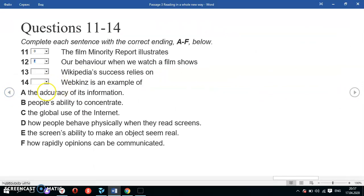Okay, so let's find from the options. A: accuracy of the information—exactly, this is option A. Let's see. B: people's ability to concentrate—not given. C: global use of screens—not given. D: the screen's ability to make an object seem real—not given. It's only A. So Wikipedia is successful because of its accurate information, because any information can be corrected—an incorrect one can be eliminated with just a single click. That's why option A is correct.